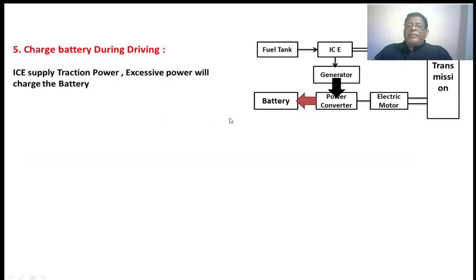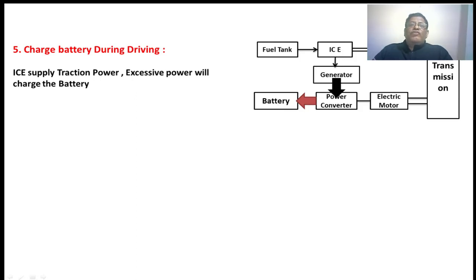Charging the battery during driving: the IC engine is supplying excessive power to the generator, and the generator output is given to the rectifier. This rectifier will be converting the AC power to DC power, charging the battery. The tractive power also will be given by the IC engine only. This is the mode where the battery is charging during driving.